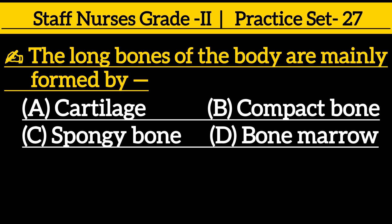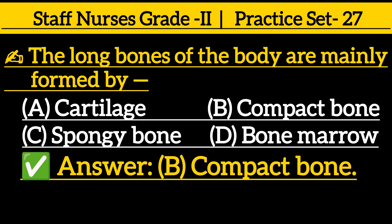Next one: the long bones of the body are mainly formed by — option A: Cartilage, option B: Compact bone, option C: Spongy bone, option D: Bone marrow. Correct answer is option B: Compact bone.